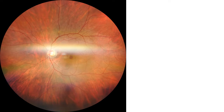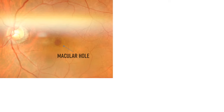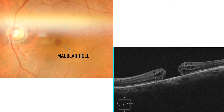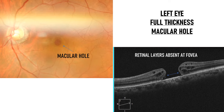Now in this second picture, this is the fundus photo of the left eye of a patient. At the center of this picture, i.e. in the region of the macula, you can see a circular area which is reddish brown in color. This is what a macular hole looks like, and this reddish color is due to the underlying choroid. Here is the OCT of this eye. You can see that the layers of the retina are absent at the fovea. So this is a case of left eye full thickness macular hole.